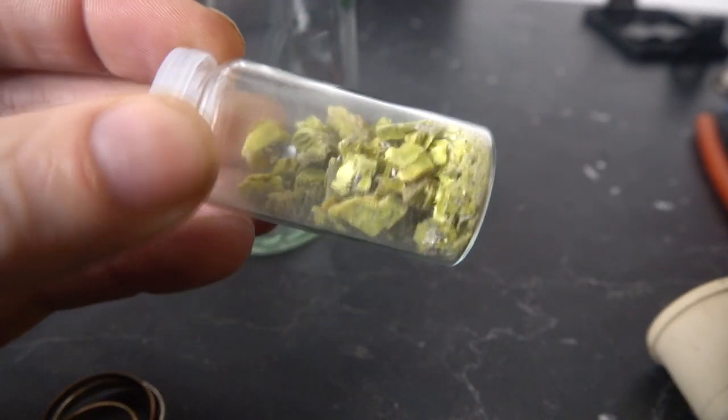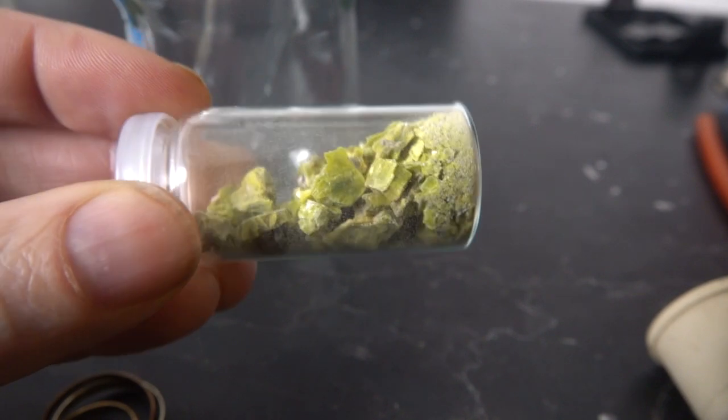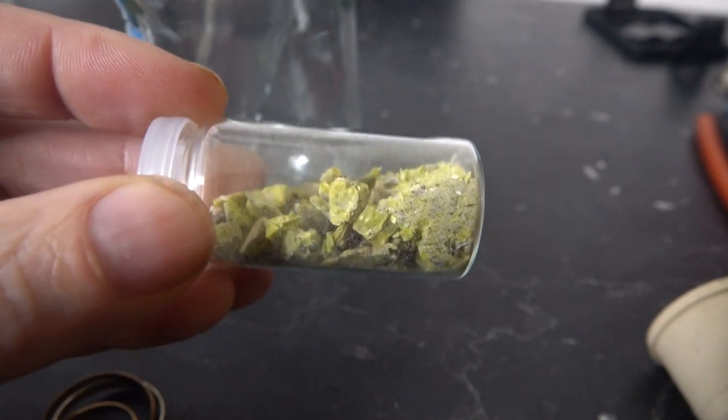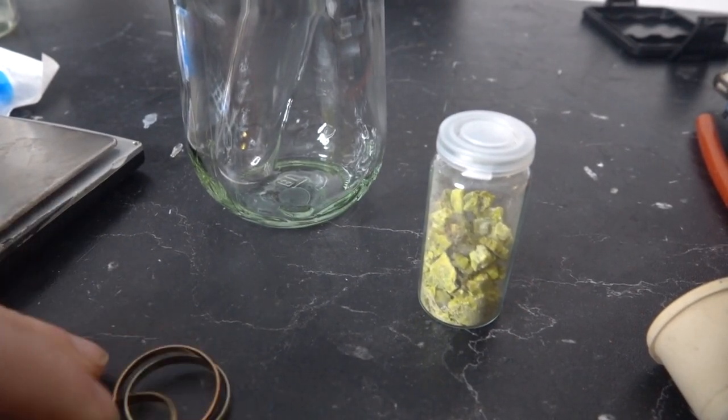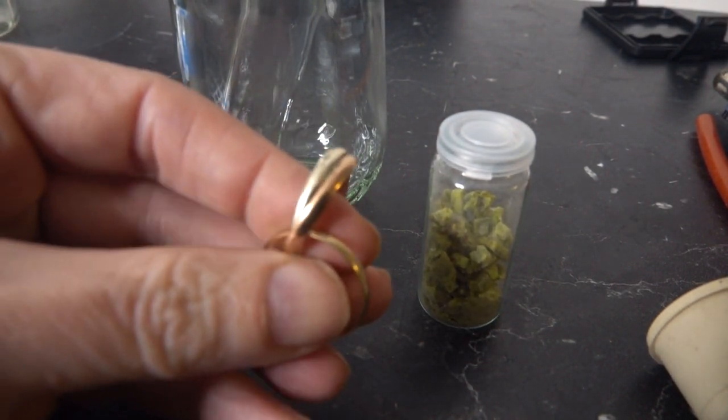So the question is, how do you turn that into uranium metal? Now, Autunite is about 50% by weight uranium. Uranium, by the way, is the same density as gold. This is also not far off the density of gold.